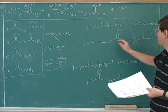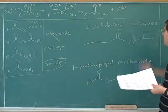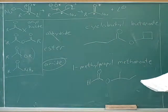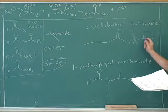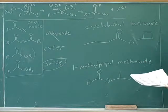The main chain has four carbons, that's butano-ate. Oate means an ester, and the ester substituent is a cyclobutyl, so a four-membered ring.